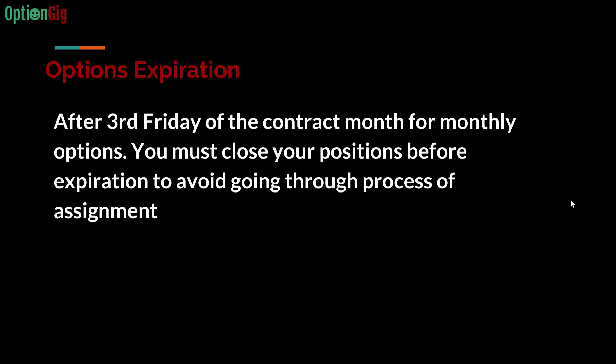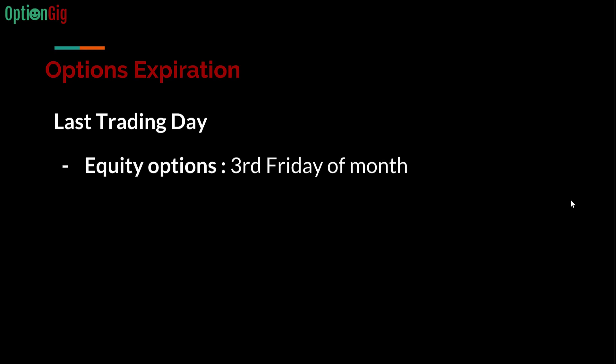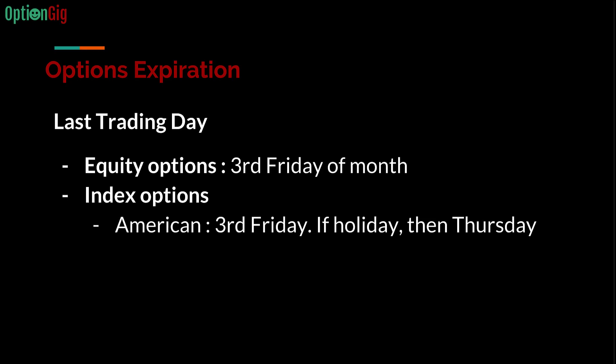When do options expire? Most options expire after the third Friday of the contract month for monthly options. In this session we'll focus on monthly options only. For equity options, the last trading day is that third Friday. For index options, the last trading day is also the third Friday — or Thursday if it's a holiday — for American-style options. For European-style options it is the third Thursday.